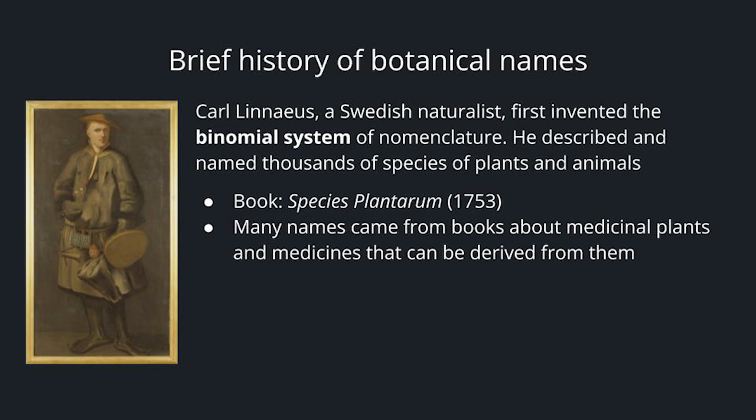A brief history of botanical names. Carl Linnaeus was a Swedish naturalist who first invented the binomial system of nomenclature. He described and named thousands of plants and animals, and his book was released in 1753. Many of the names came from books about medicinal plants and medicines that can be derived from them.